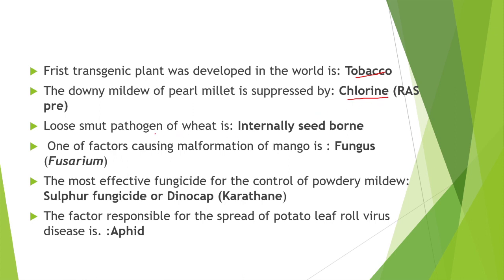The loose smut pathogen of wheat is internally seed-borne. In this disease, the spore masses are initially covered by a silvery membrane, which later ruptures, and the disease is controlled by solar heat treatment of seeds.